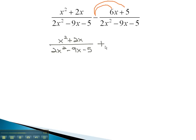And now we have plus, because we've taken care of the negative, negative 6x minus 5 over 2x squared minus 9x minus 5.